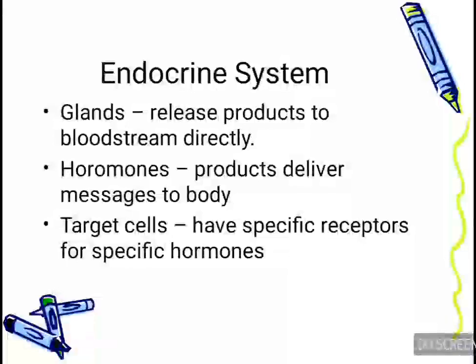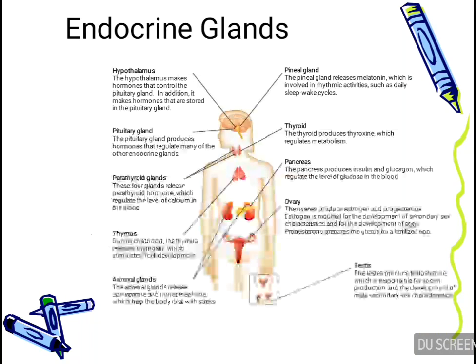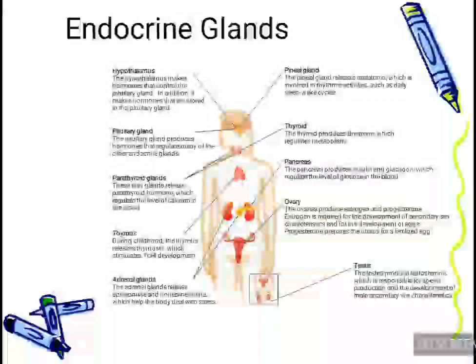The endocrine system is composed of three components: glands, hormones, and target cells. Glands release their products directly into the bloodstream. Those products are hormones, which deliver messages to the body. Target cells have specific receptors for specific hormones. This picture shows the different types of endocrine glands found in our body.